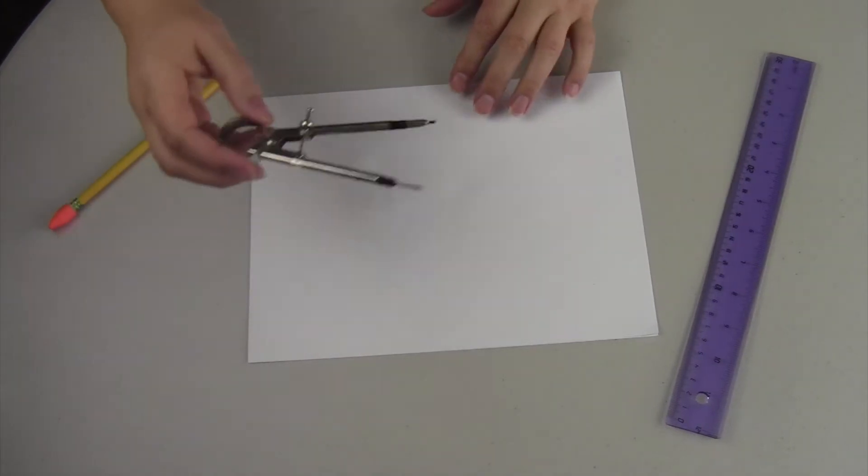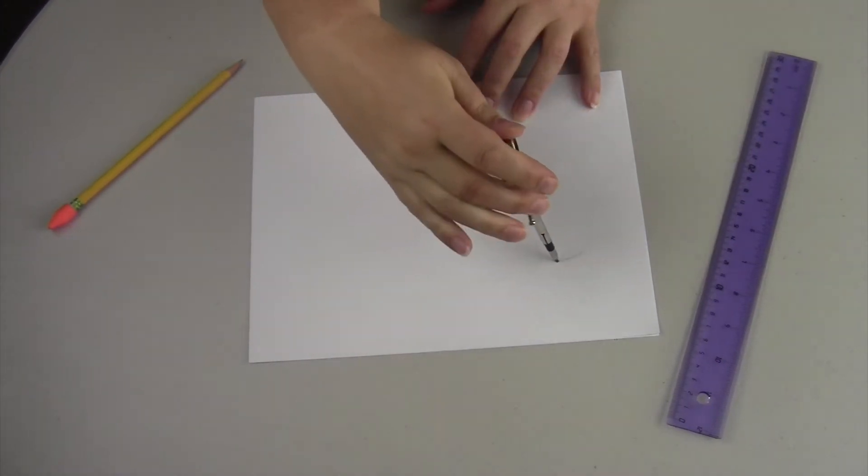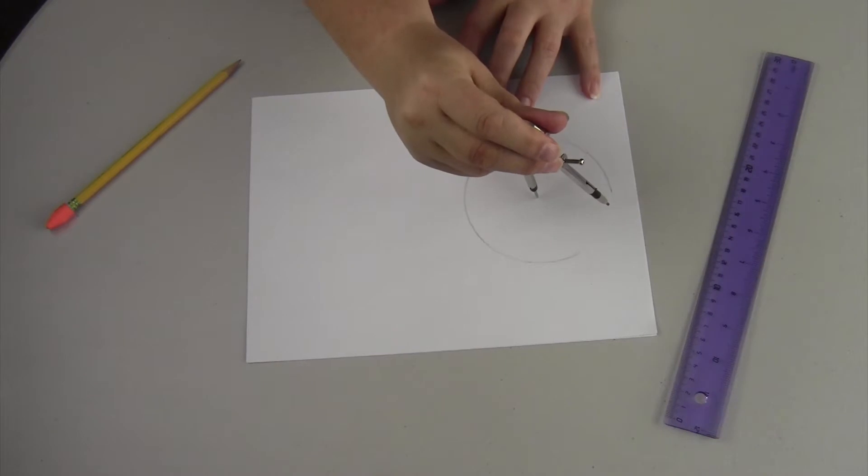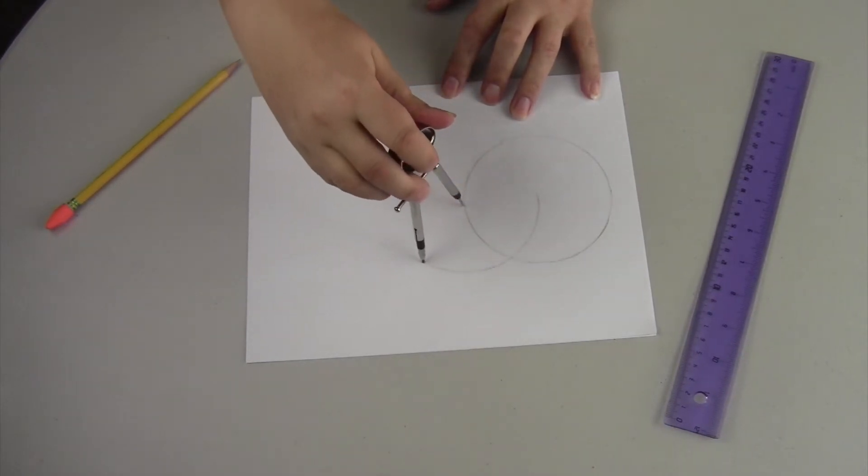The next way to create a heptagon is to go ahead and create your Vesica Pisces. And then you've got your first circle, then you open up for your second circle.